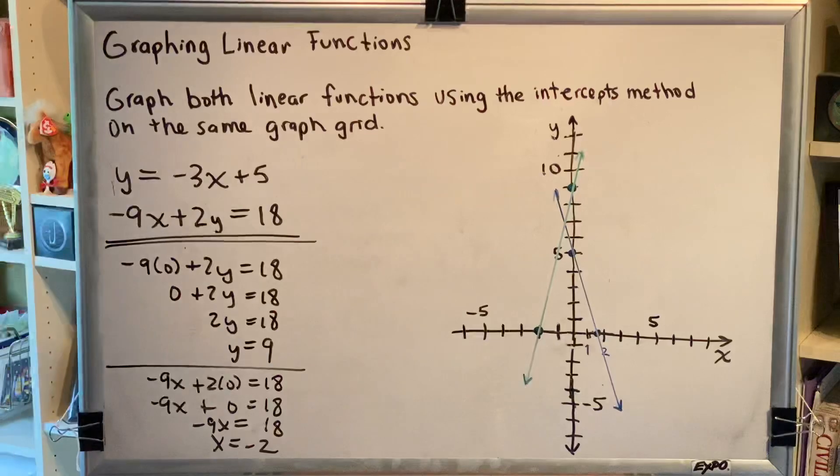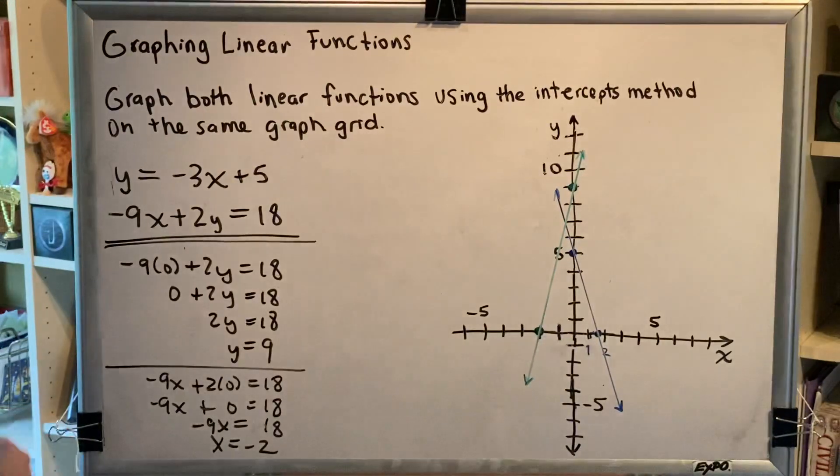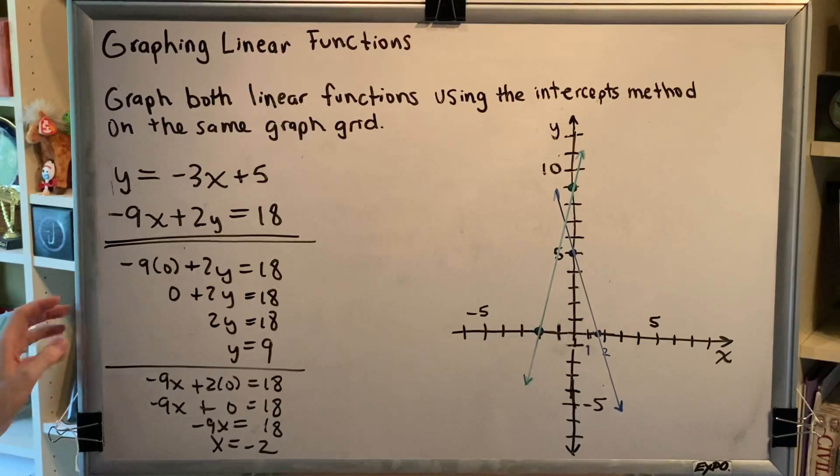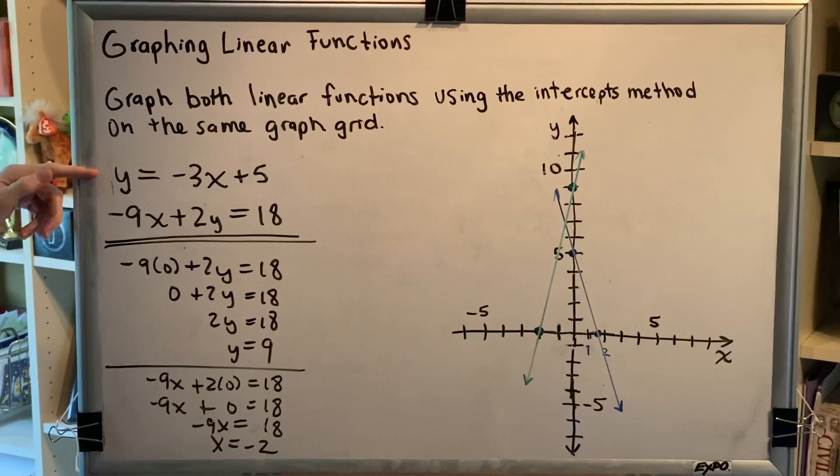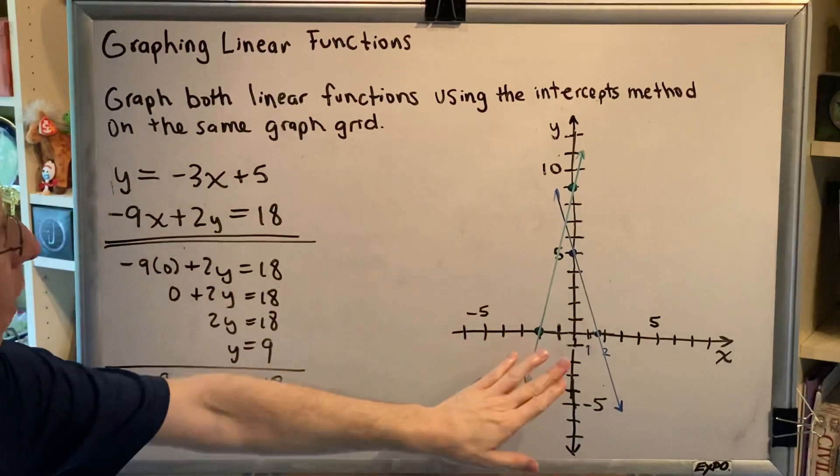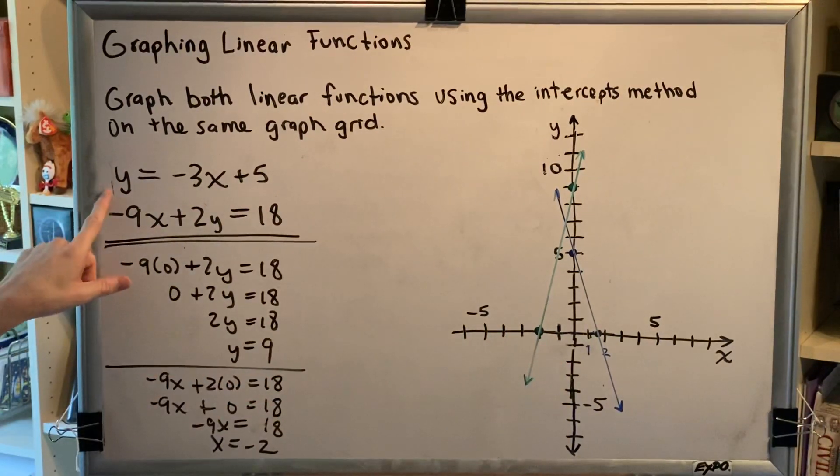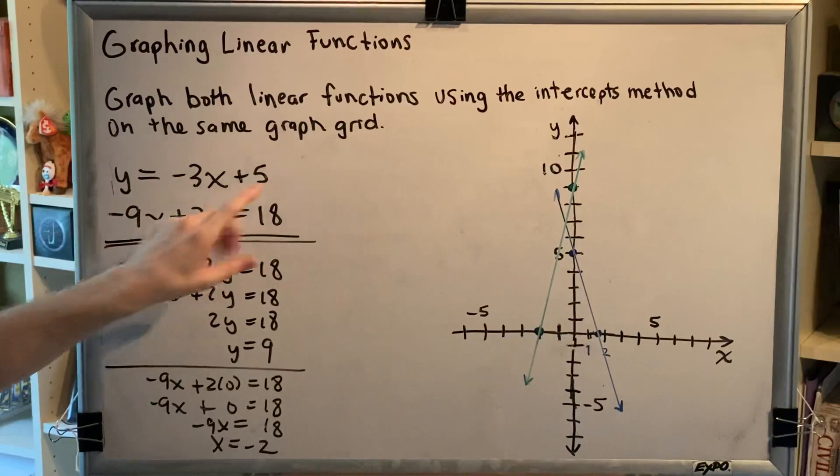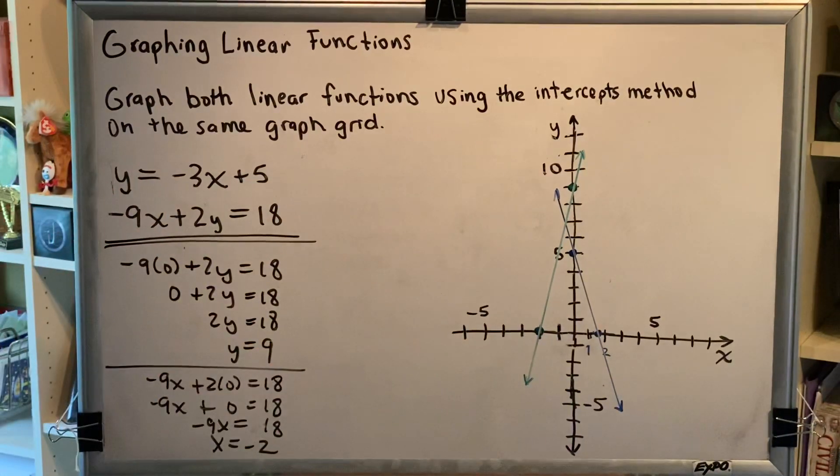So this is the intercepts method of graphing linear functions. As a brief recap, you take your equation, replace one of the variables with zero and solve for the other, then plot that point. Replace the other variable with zero and solve for the first and plot that point. Then connect both points with a straight edge.